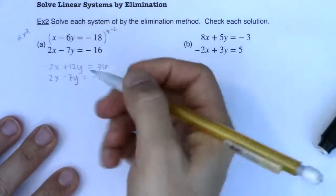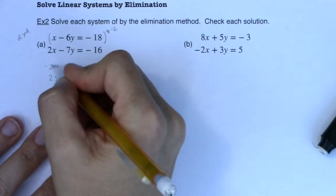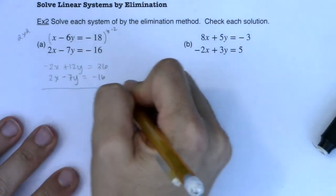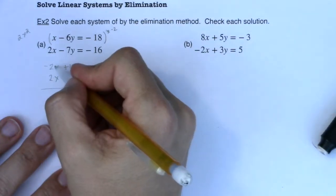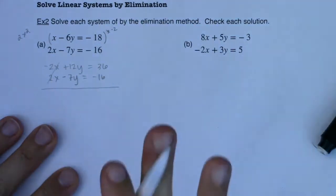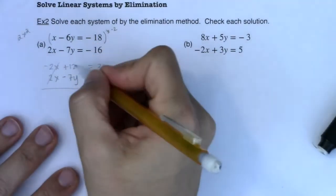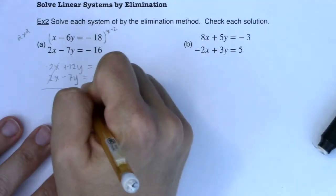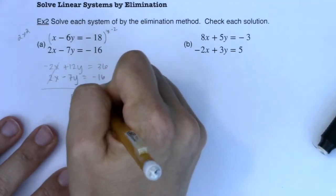And then when I do this, you can see now I have a negative 2x and a positive 2x here. So what I can do is I can add these two equations to each other. Negative 2x plus 2x they eliminate. That was by design. That's the whole point of this. 12y minus 7y becomes 5y. 36 minus 16 becomes 20.